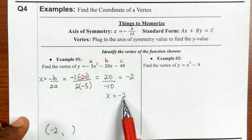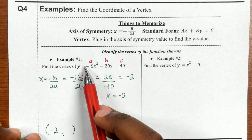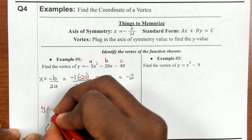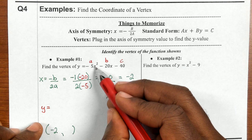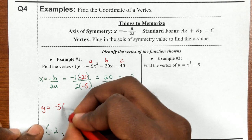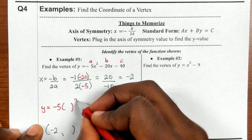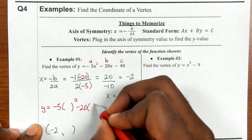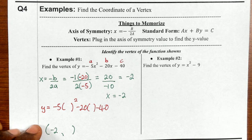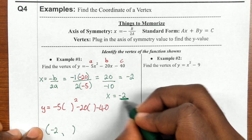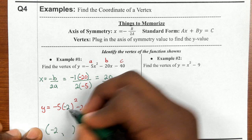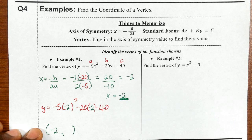Since I know x, now I need to find y. To find y, all I have to do is plug this number back into my equation. I'm going to rewrite the equation and replace x with parentheses — and the negative 2 goes inside both of those parentheses.